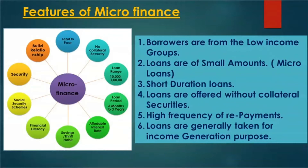Now let us go through the features of microfinance. In the textbook on page 77, there are six features given. The first feature is: borrowers are from the low-income group. Microfinance is aimed towards poor people and especially towards women, to empower them.